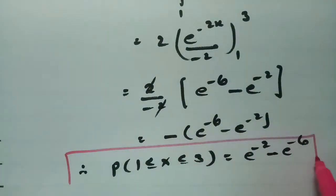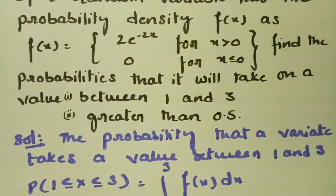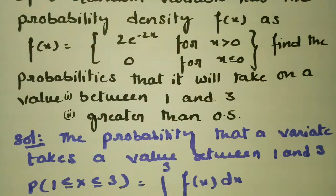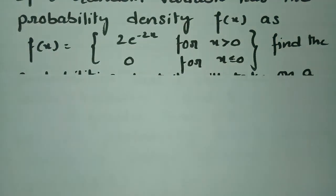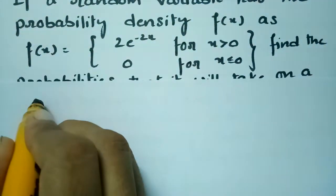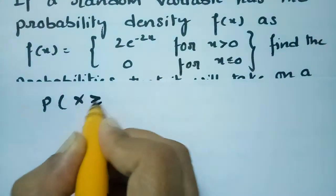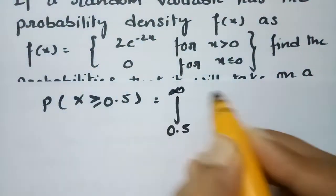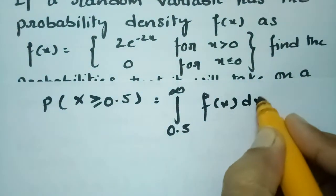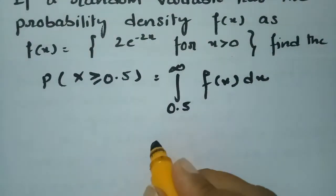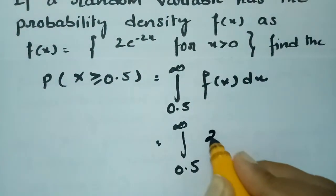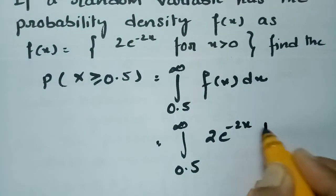That is the first value. Next, we find the probability that the variate takes a value greater than 0.5. P(x > 0.5) is the integral from 0.5 to infinity of f(x) dx, which equals the integral from 0.5 to infinity of 2e^(-2x) dx.